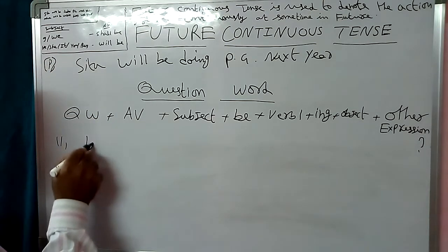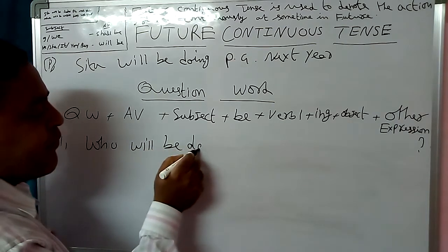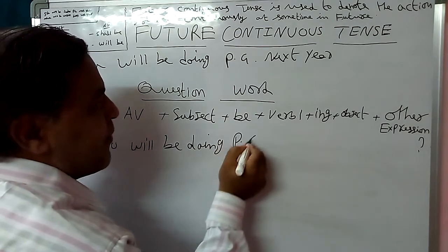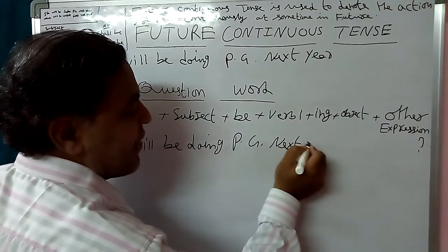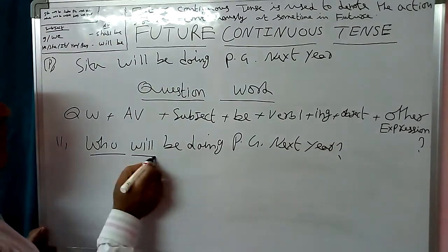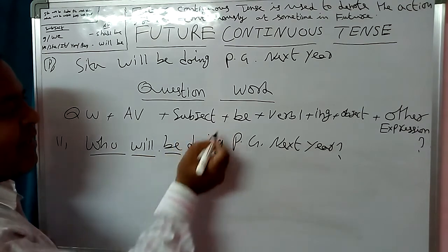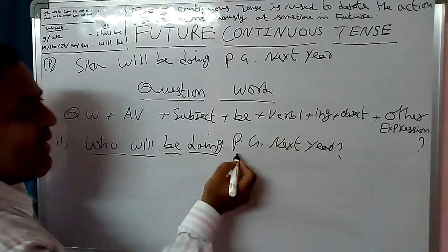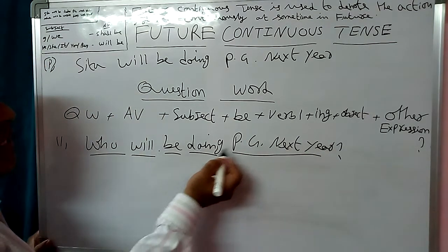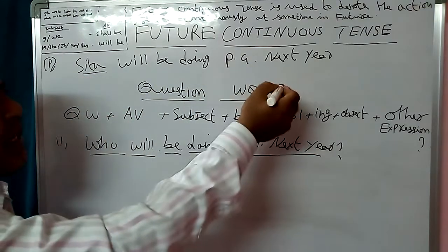Who will be doing PG next year? 'Who' is the question word. Will + Be (auxiliary). The subject is not written because the subject is the answer. Be + Doing (Verb 1 + -ing) + PG next year (object and other expression). Answer: Sita. Sita will be doing PG next year.